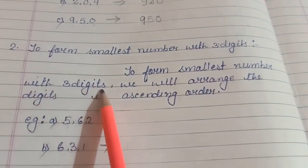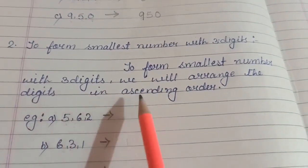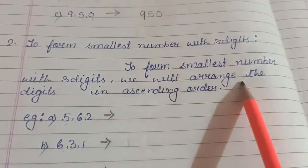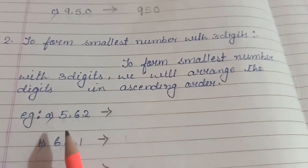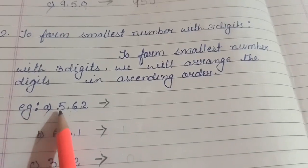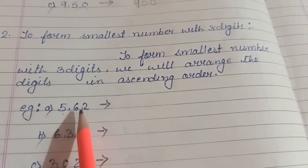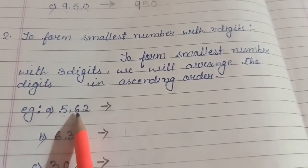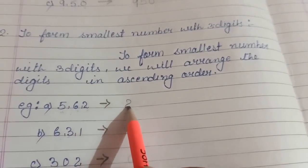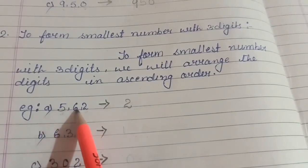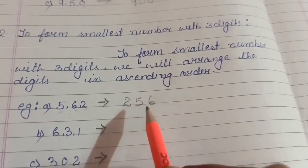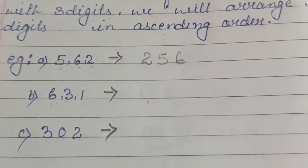Now let's see how to find the smallest number from three digits. To form the smallest number with three digits, we arrange the digits in ascending order — from smaller to larger. The digits are 5, 6, and 2. Two is the smallest, so we write 2 first, then 5 since 5 is smaller than 6, and then 6. So 256 is the smallest number.